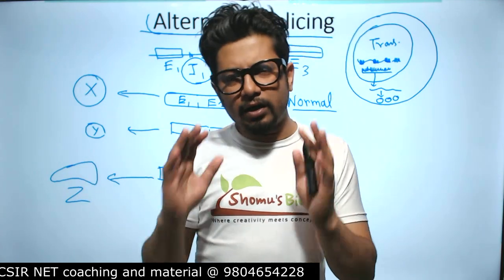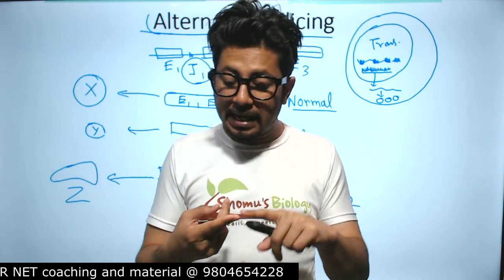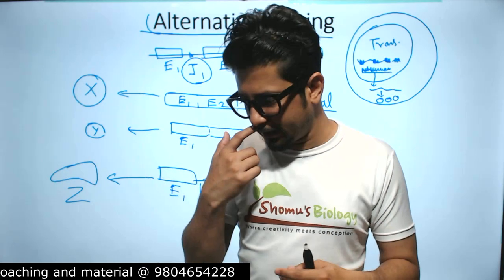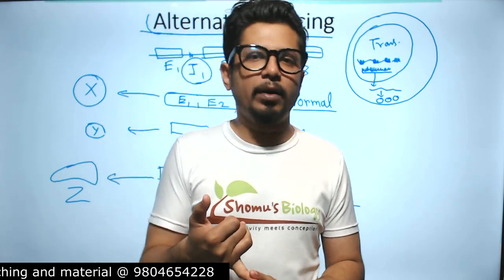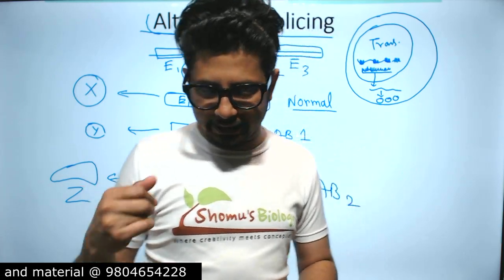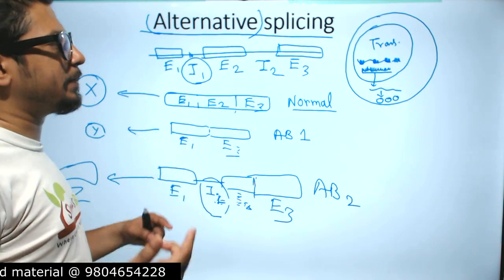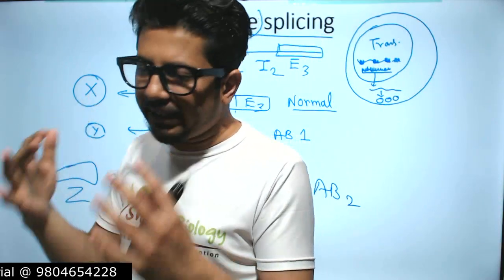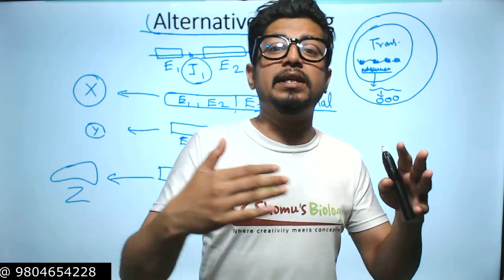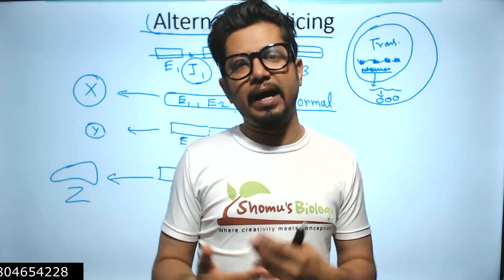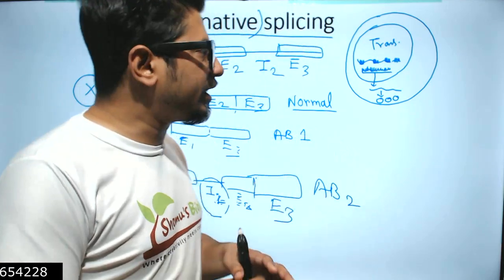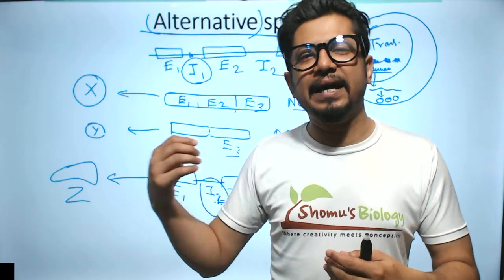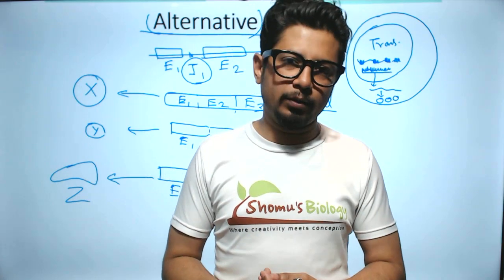Does alternative splicing require energy, and is it common in every stage in eukaryotes? Yes, it requires energy from ATP hydrolysis. Unlike regular splicing — which must occur after every transcription event to mature the mRNA for nuclear export — alternative splicing is more like a trial-and-error effort; a gamble the cell plays to see what varieties of protein it can produce.